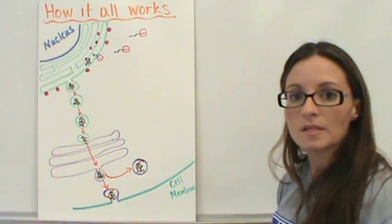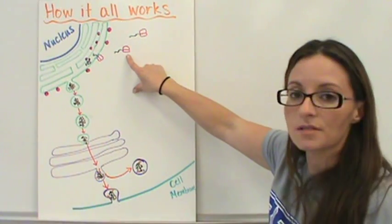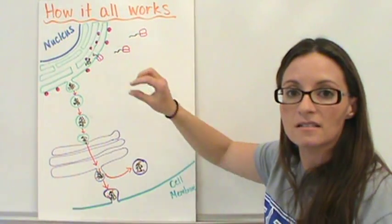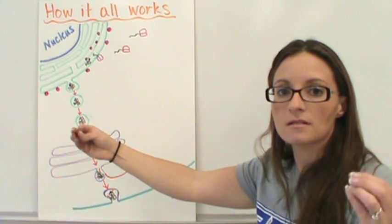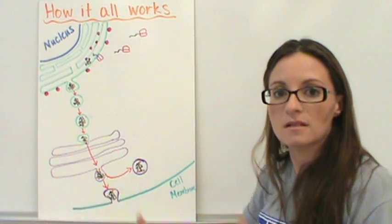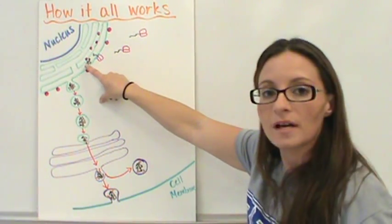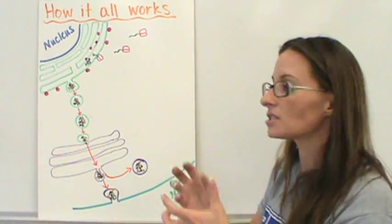So what happens is, first of all, the ribosomes take the proteins and just make the strands of proteins. So long chains of amino acids to make the strand of proteins. The proteins then have to be changed in the endoplasmic reticulum is where they get folded into the correct shape.